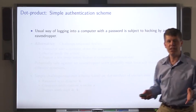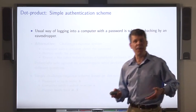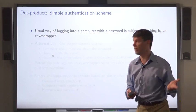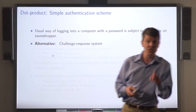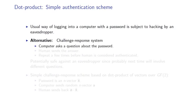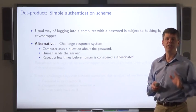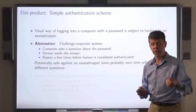Let me give you an application of dot product over GF2. A usual way of logging into a computer is by sending the password over the wire to the computer. The computer checks to see if the password matches its records and lets you in if it does. That's dangerous because if an eavesdropper managed to see the password going over the wire, she could then break into the computer herself. So here's an alternative approach called challenge response: the computer asks you a question, and you give the answer based on your knowledge of the password. You do this a few times until the computer is convinced this human knows the password and lets him in. This is potentially safer against an eavesdropper because the password is never sent over the wire.